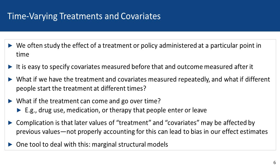In these kinds of situations where we have covariates and treatments that are changing over time, this introduces an added complication to how we analyze and evaluate these types of treatments and policies. We know from previous research that if we just use traditional regression adjustment, this could lead to bias in our effect estimates and may even mask the existing effects of treatments and policies. One way to deal with this time-varying treatment and time-varying confounding is to use marginal structural models.